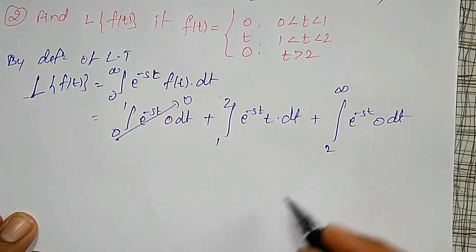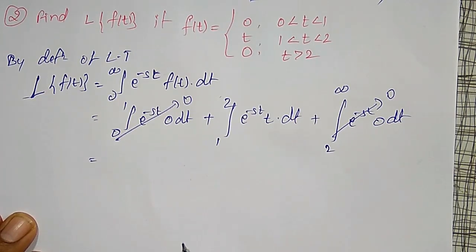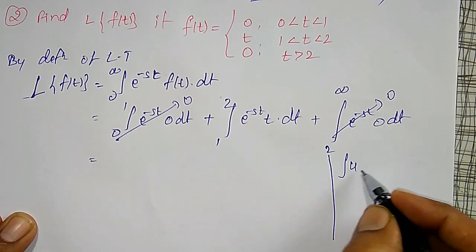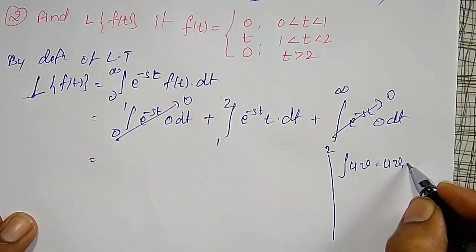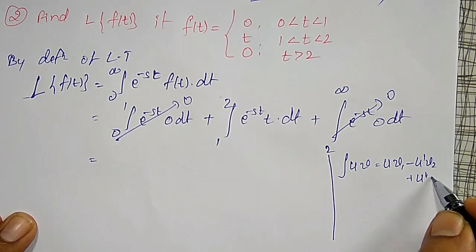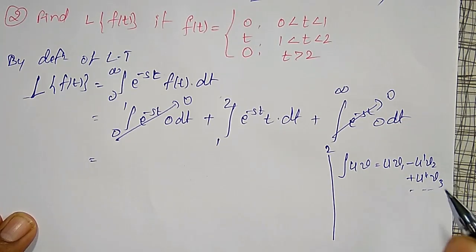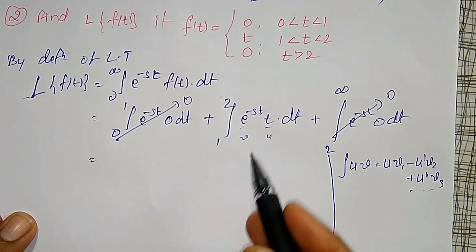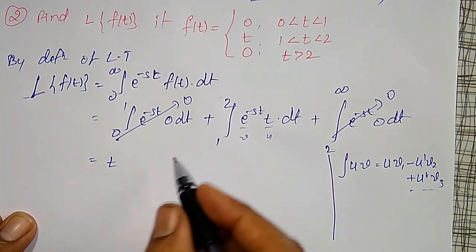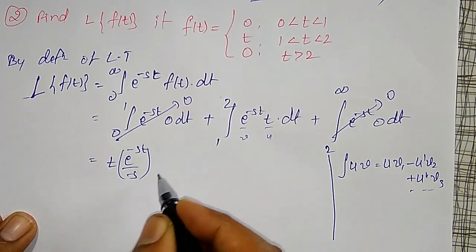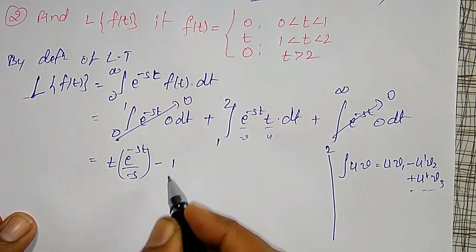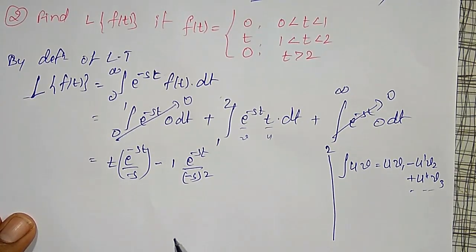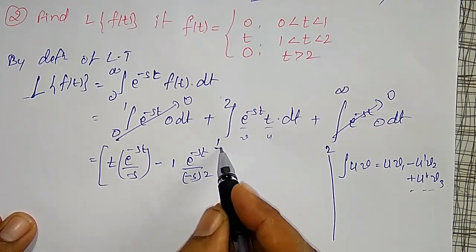To integrate e^(−st)·t from 1 to 2, I use Bernoulli's rule: ∫uv = u·v₁ − u'·v₂ + u''·v₃ − ... Taking u = t and v = e^(−st), the result is: t · e^(−st)/(−s) minus the derivative of t (which is 1) times e^(−st)/(s²). Since the second derivative of t is 0, the series terminates. This expression is evaluated between limits 1 to 2.